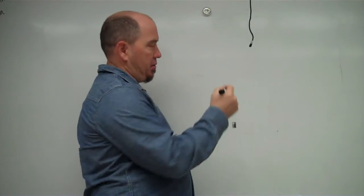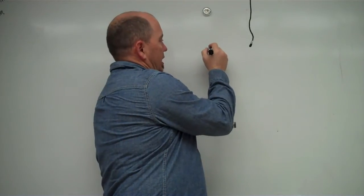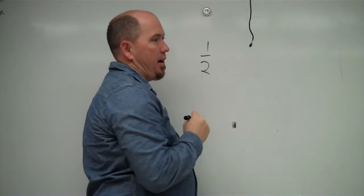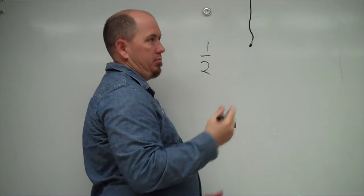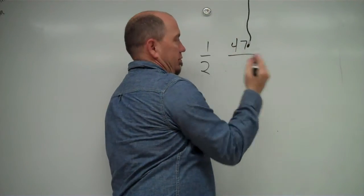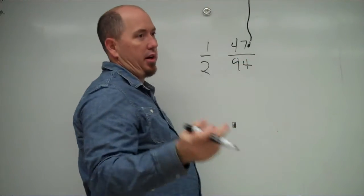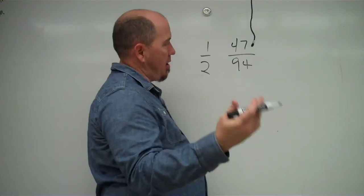So let's do the equivalent fractions real quick. We'll take like, let's take a half. Half and 47, 94ths. Something like that. Okay, are they the same? I don't know.